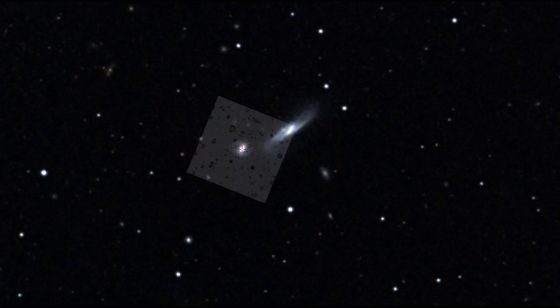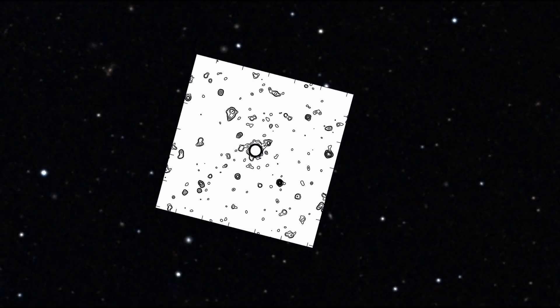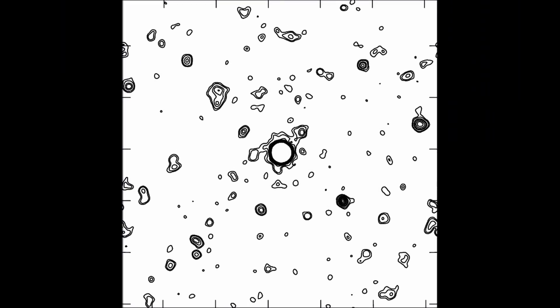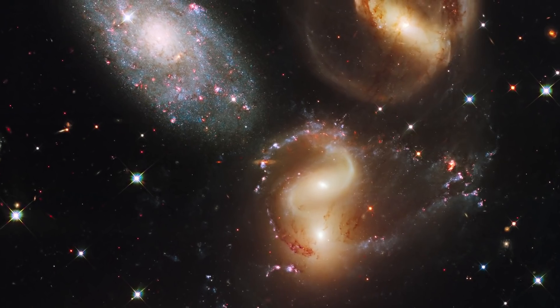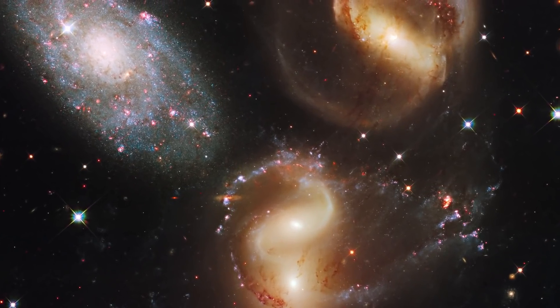This together with the information in the first video starts to paint a picture which shows that galaxies may form from other galaxies through the material ejected from the core. What we see as galaxy mergers may in fact be the opposite.